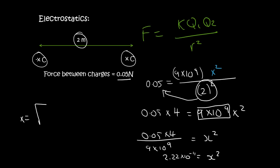And so to get x by itself, you would have to square root 2.22 times 10 to the minus 11. And that'll give you 4.71 times 10 to the minus 6. And remember we are now looking for charge. And the SI unit of charge is Coulomb.